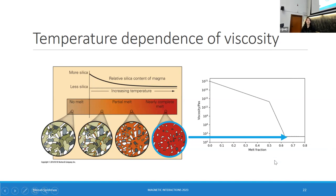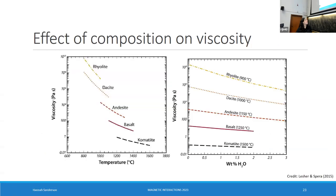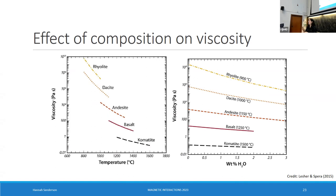This is also not only affected by temperature — it's also affected by composition. Here are some examples of different magmas with different silica contents. On this logarithmic scale, we've got about eight orders of magnitude difference in viscosity between a rhyolite and a basalt. Water content can also have an effect on viscosity. So when we understand viscosity, we have to think about temperature, composition, and water content — and those are all things we're eventually going to incorporate in my models.